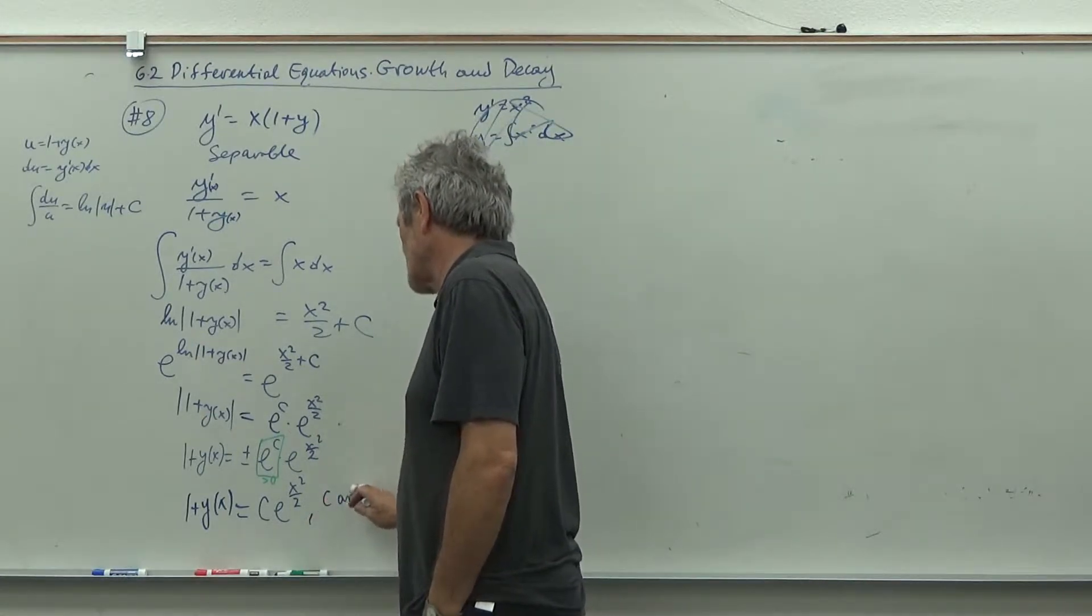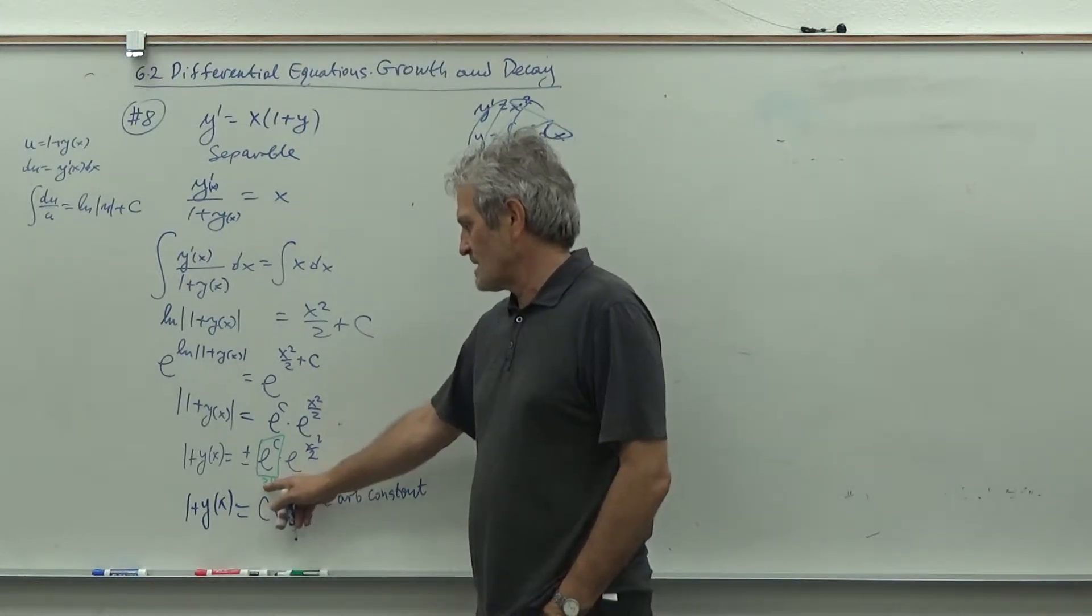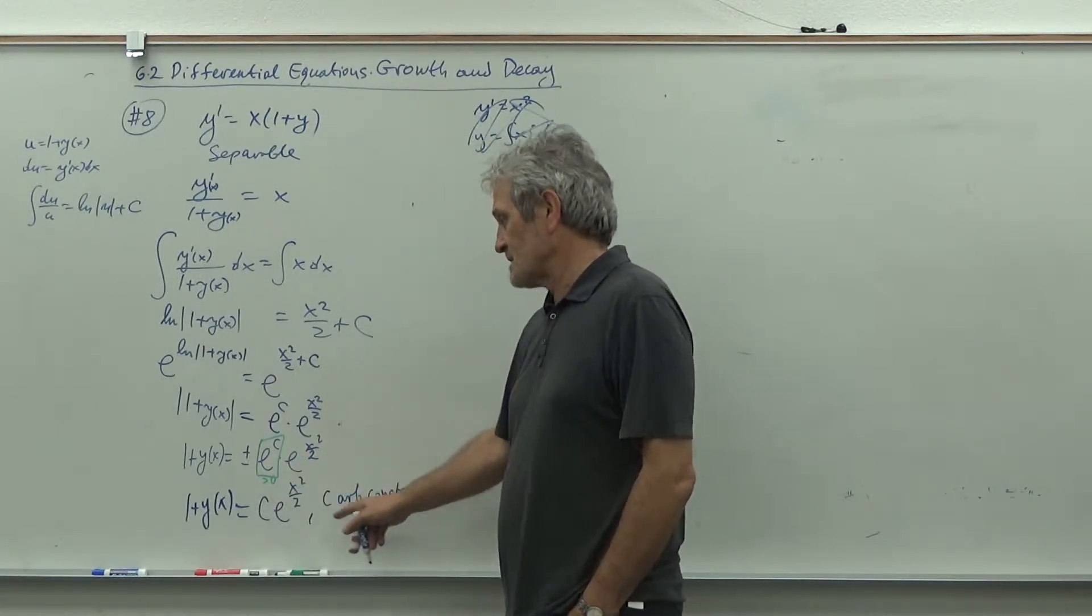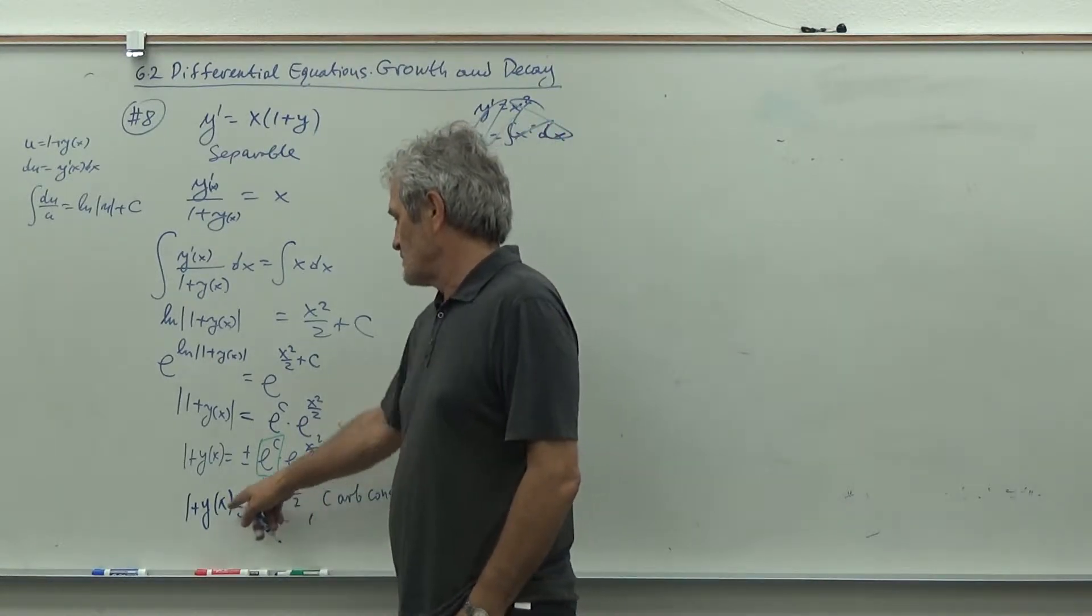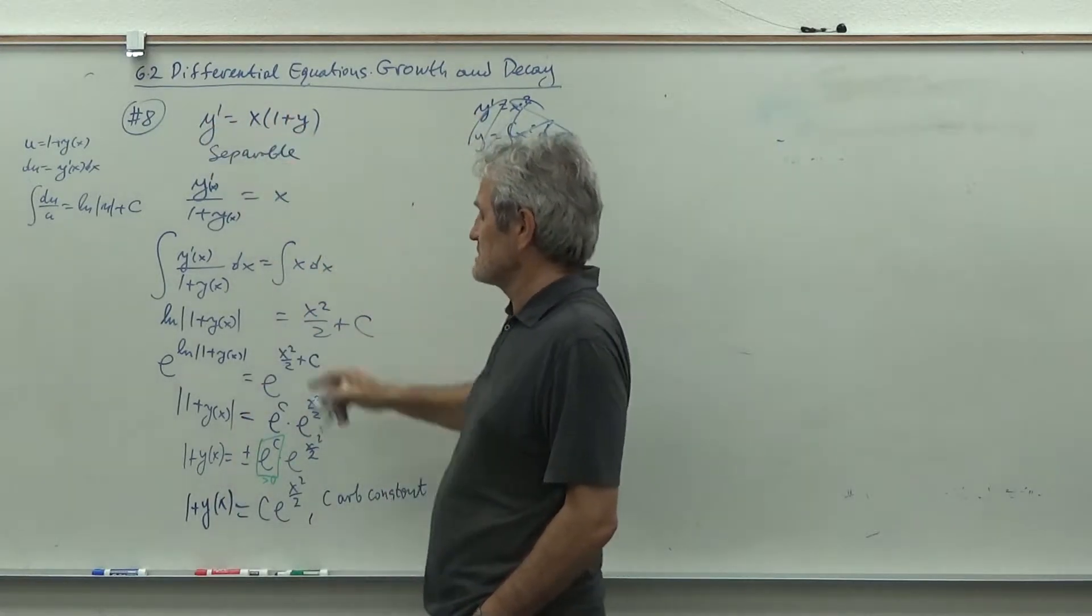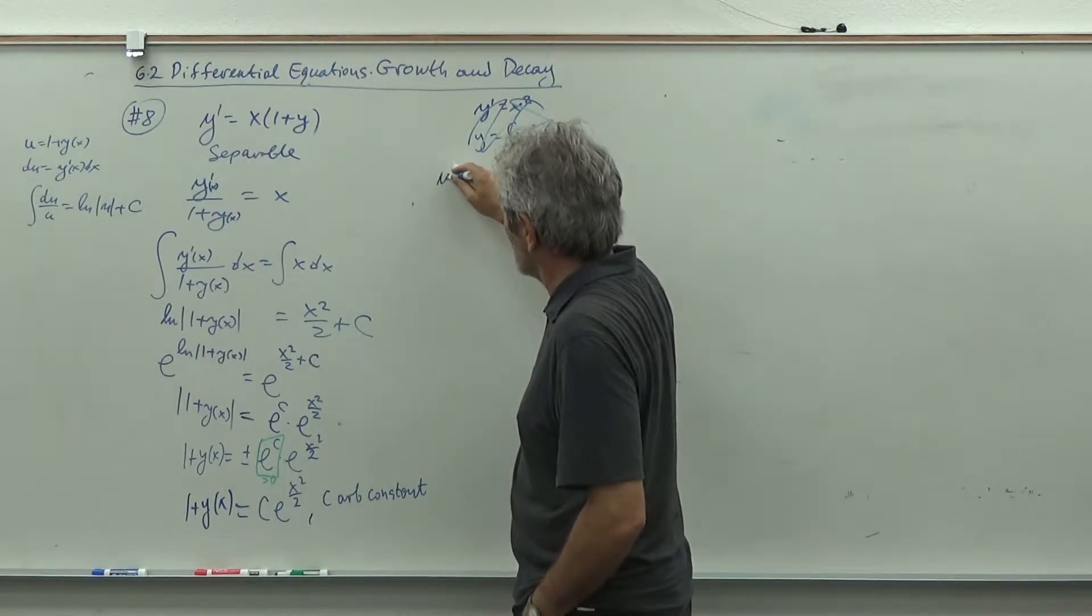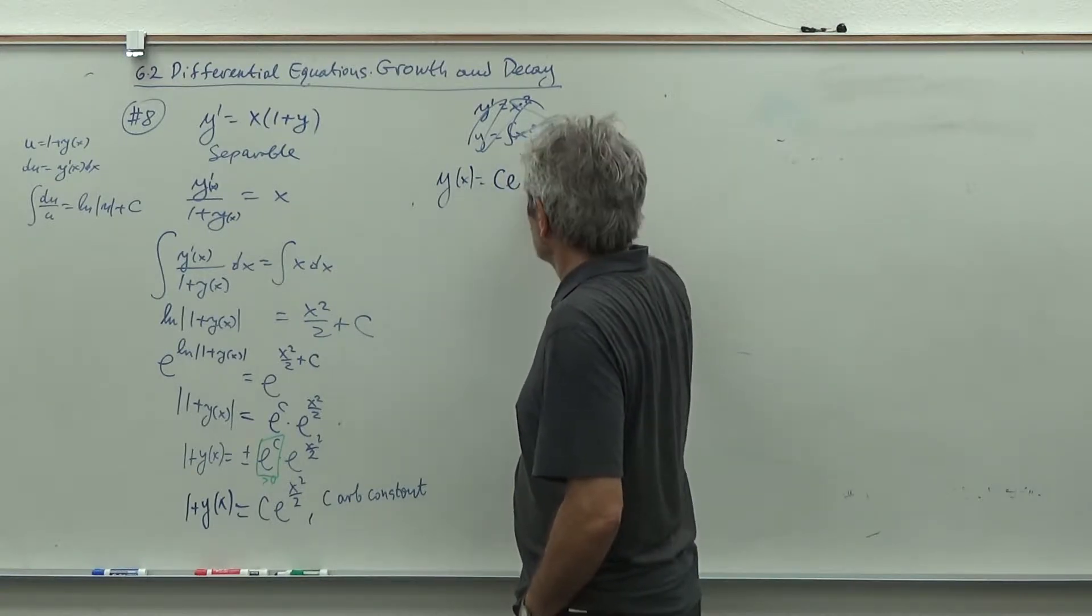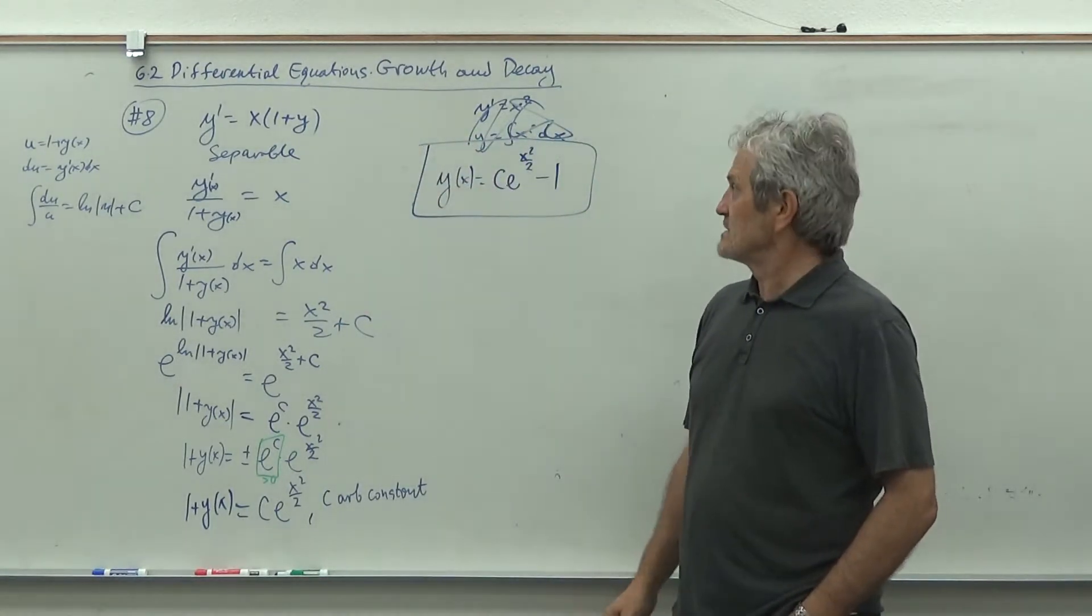So I can rewrite it as one plus y of x equals C e to the x squared over two. That's our solution where C is an arbitrary constant. You can object and say I justified why C could be greater than zero or less than zero, but why could C be zero? Well if C is zero then y of x equals negative one, which satisfies the equation. So every C is really okay. This is called the general solution.